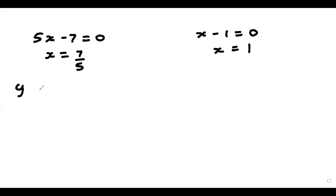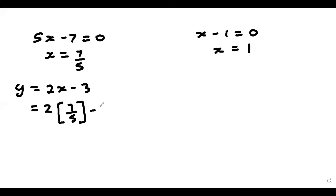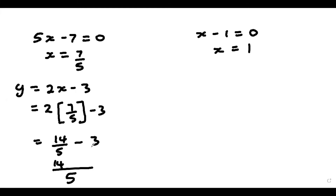So now we have (5x minus 7) equal to 0, and (x minus 1) equal to 0. That means x is equal to 7 over 5, and x is equal to 1. Using equation 1, where y equals 2x minus 3, we substitute x with 7 over 5, so we have 2 times 7 over 5 minus 3, which is 14 over 5 minus 3. Finding the LCM, which is 5, that gives us (14 minus 15) over 5, so y is equal to minus 1 over 5.